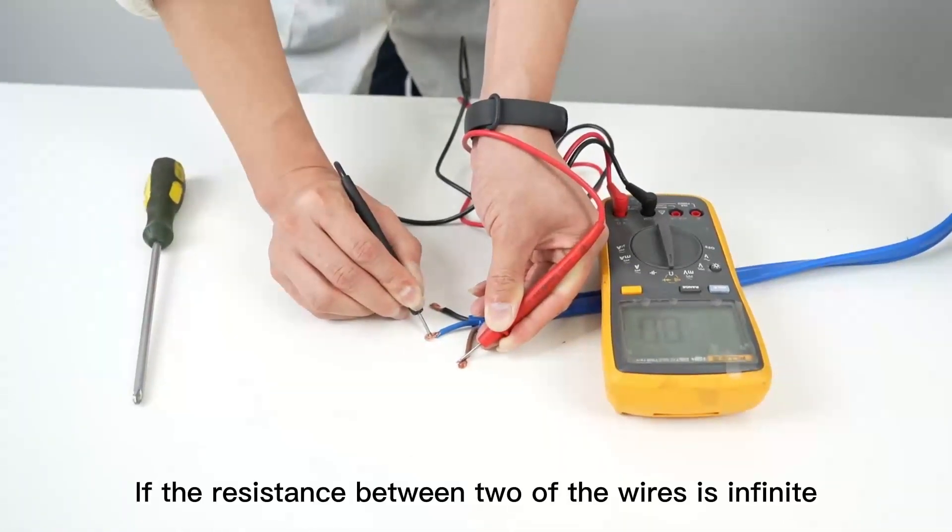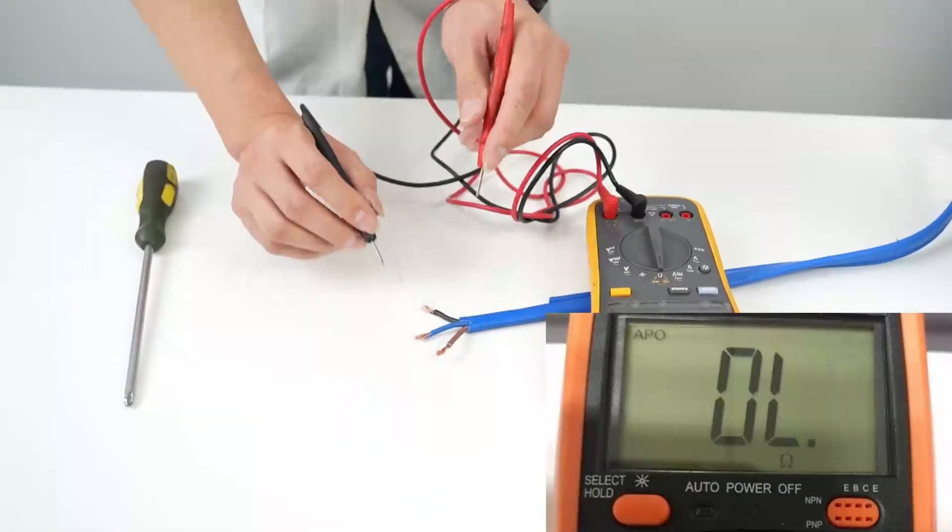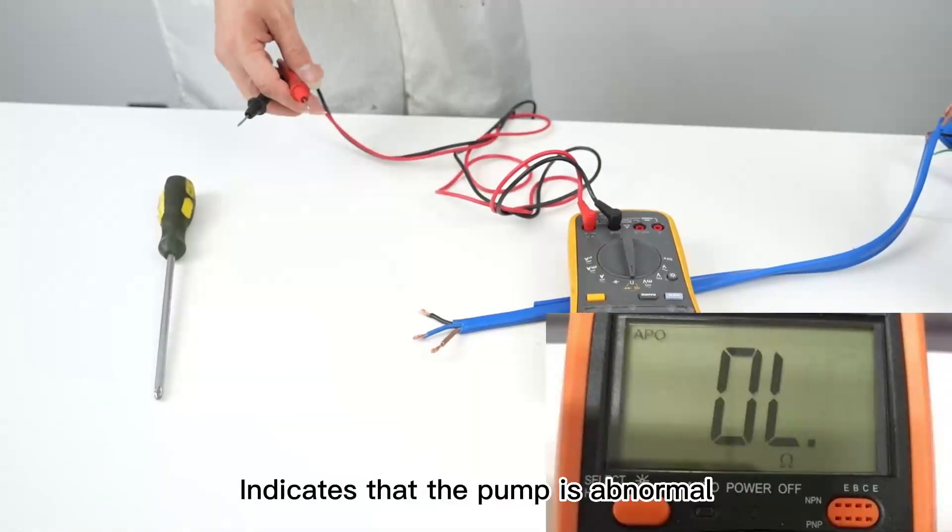If the resistance between two of the wires is infinite, this indicates that the pump is abnormal.